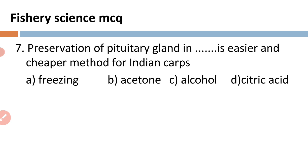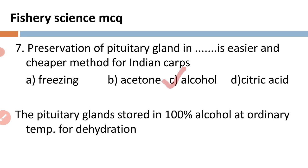Number seven: preservation of pituitary gland in blank is an easier and cheaper method for Indian carps. After dissecting the pituitary gland, it is stored in a particular chemical — A) freezing, B) acetone, C) alcohol, and D) citric acid. After removing the pituitary gland, it is preserved in alcohol. The pituitary gland is stored in 100% alcohol at ordinary temperature, by which dehydration of this particular gland takes place.